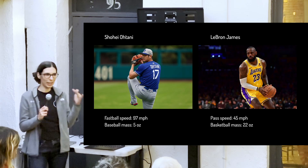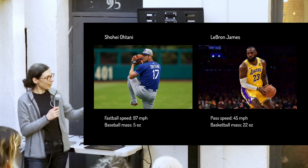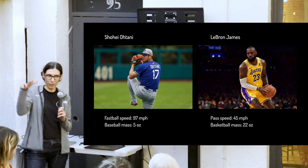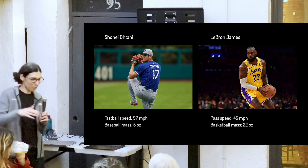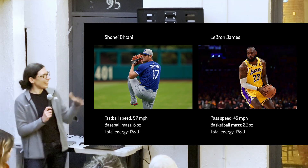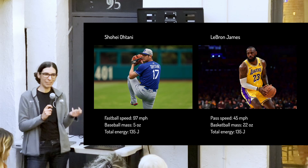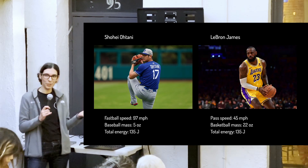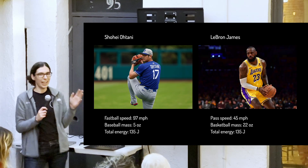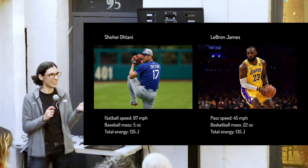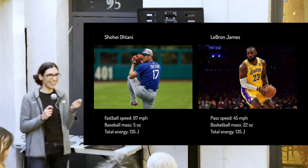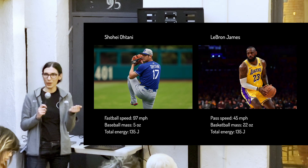Interestingly, if you calculate the total energy — combining the kinetic energy of the motion and the potential energy of how far away the object is from the ground — you get exactly the same number for both: 135 joules. The key lesson here is that even if two objects have the same total energy, it is usually the case that the smaller, less massive object will be moving much faster. This is the key insight that will help us understand different types of dark matter and how we can differentiate them.